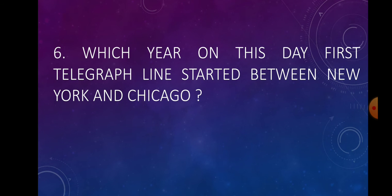Question number 6: Which year on this day did the first telegraph line start between New York and Chicago? Answer: 1848.